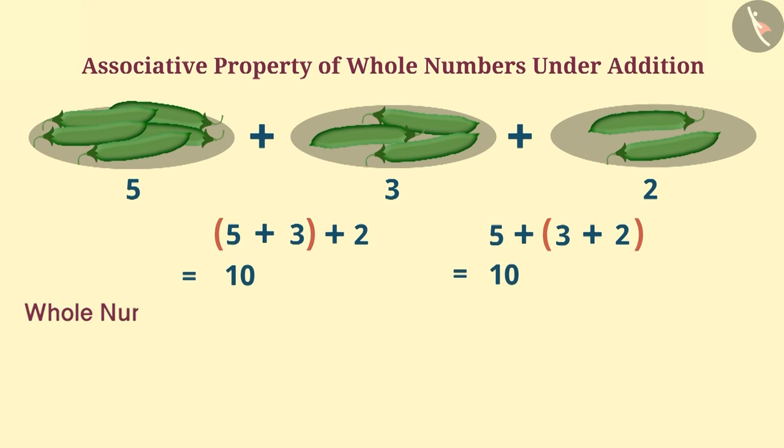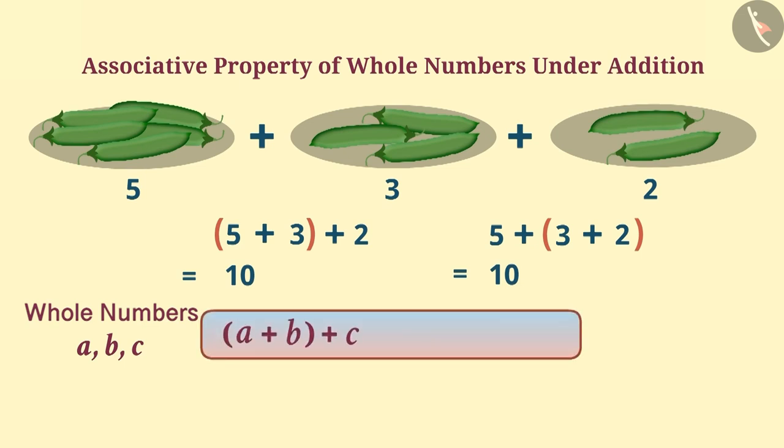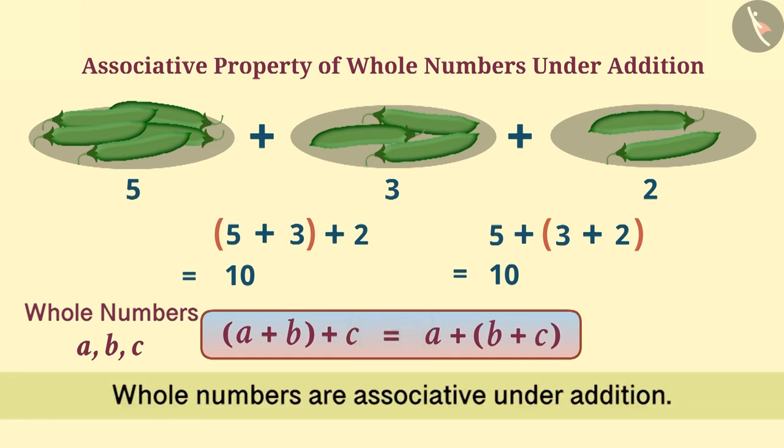In this way, any 3 whole numbers A, B and C can be added by forming a group of any type. The result of A plus B plus C is equal to A plus B plus C. This will always be the same. Therefore, whole numbers are associative under addition.